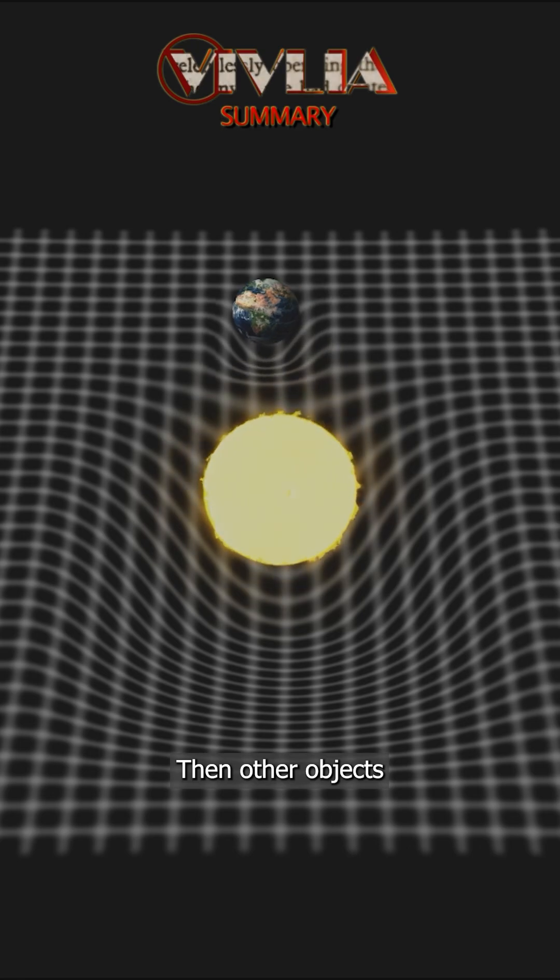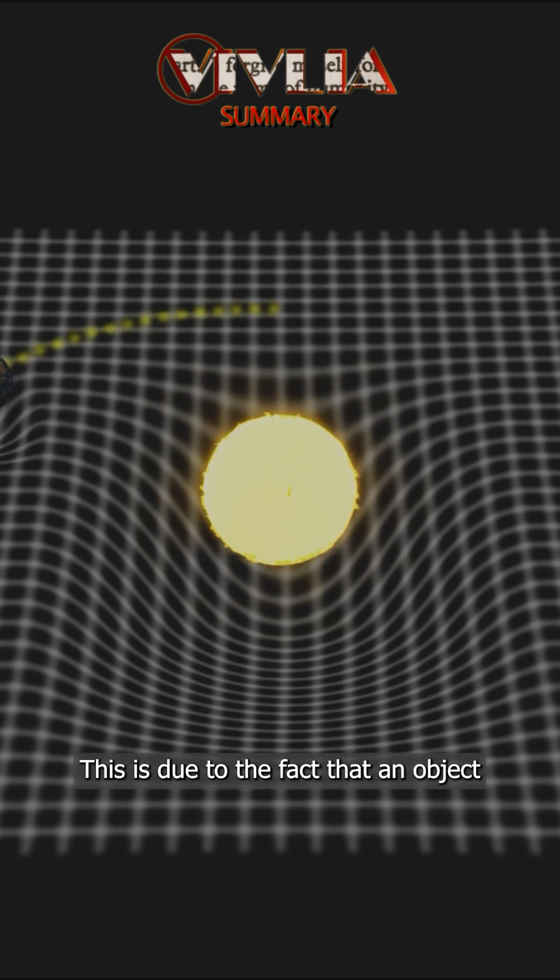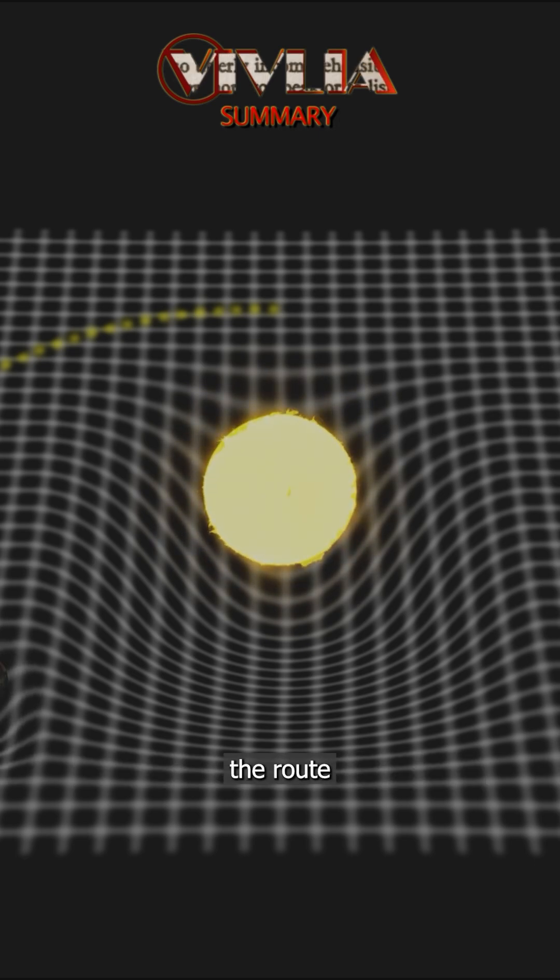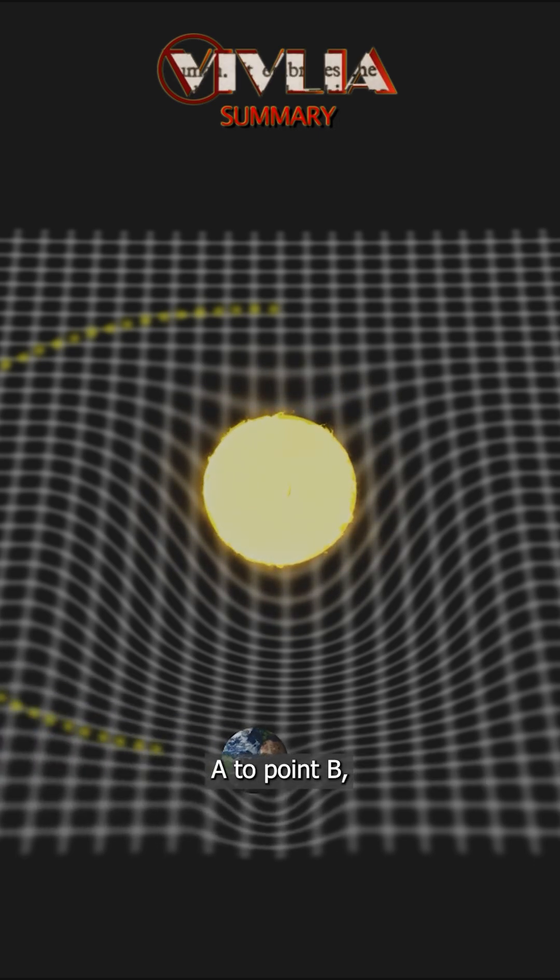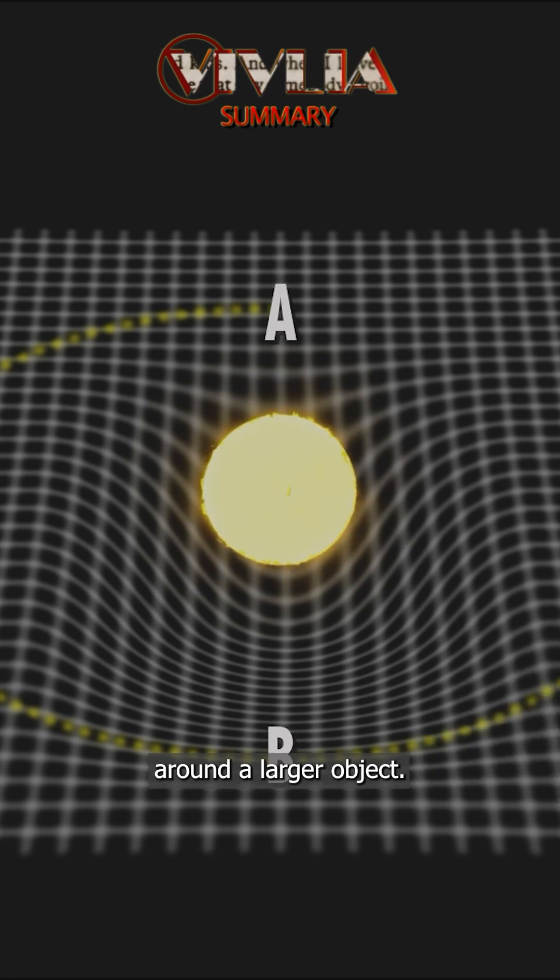Then other objects travel along these space-time curves. This is due to the fact that an object will always choose the route that will carry it from point A to point B, which is a circular orbit around a larger object.